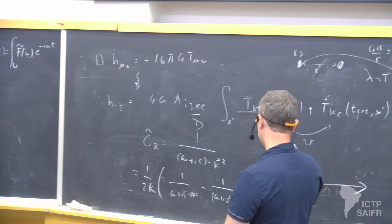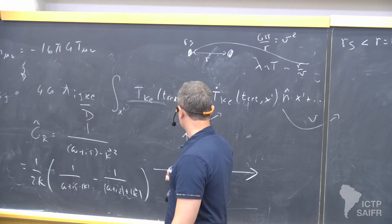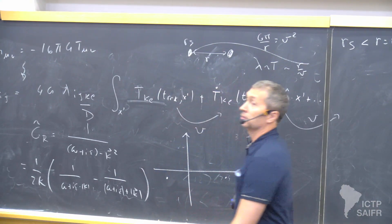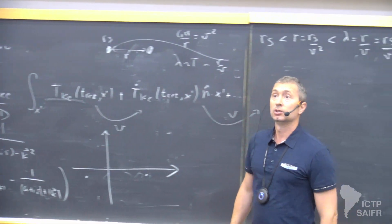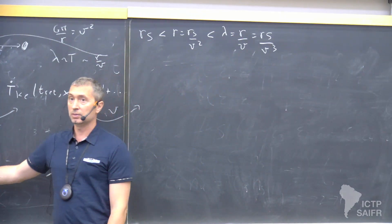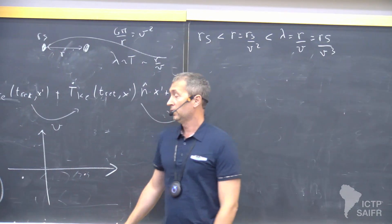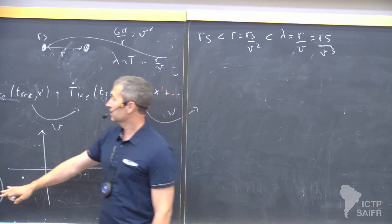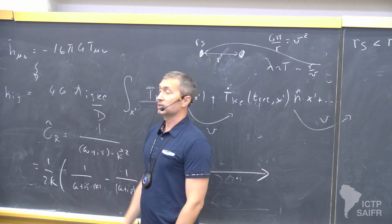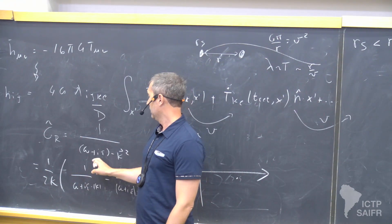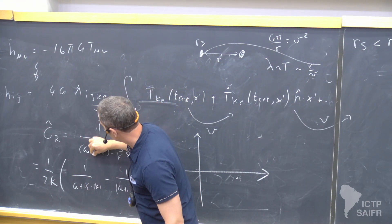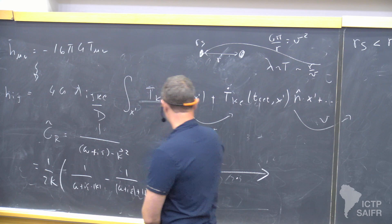When you do this, the two poles happen to be here. For the Feynman, you know they are one below and one above. For the advanced Green function, you just reverse time — reversing time is just reversing omega — so it's the other sign for the advanced.